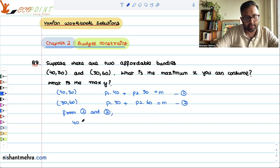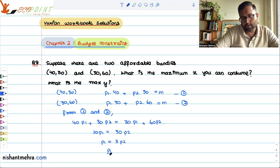It's going to be 40p1 plus 30p2 equals 30p1 plus 60p2. So you get 10p1 equals 30p2, or p1 equals 3p2, or p1 by p2 equals 3.